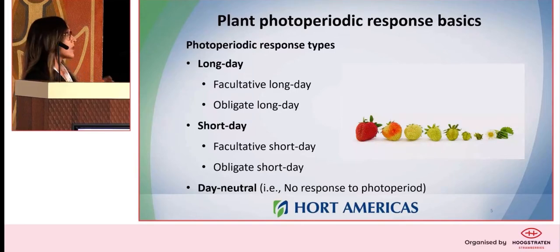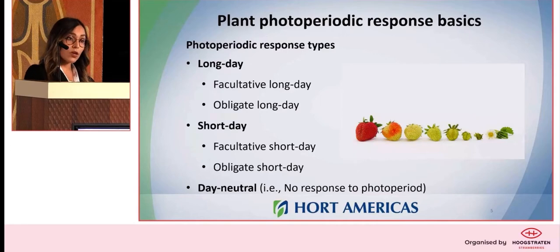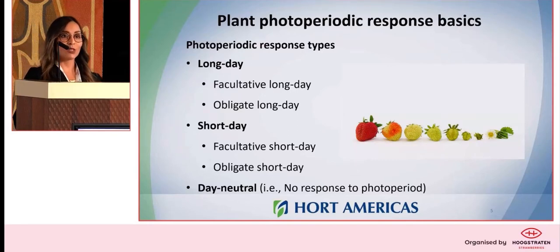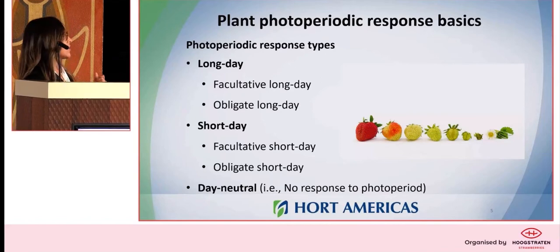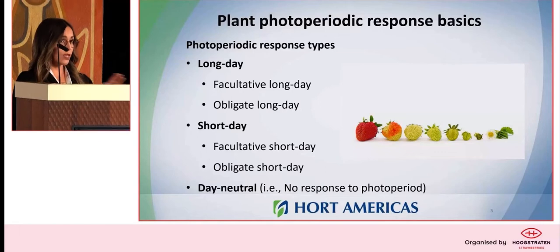Plants can be categorized as long day, short day, or day neutral. For strawberry, we can have long day cultivars, and they can have an obligate or a facultative response. A facultative response is when a plant can flower under short day and long days but will flower earlier in longer days. An obligate response is when the plant will only flower under long day conditions. Short day is when the plant flowers under short day conditions, which would be something below 14 hours photoperiod. Many strawberry cultivars have an obligate short day response. We also now have day neutral cultivars, which don't have any response to photoperiod and will flower under short days and long day conditions.